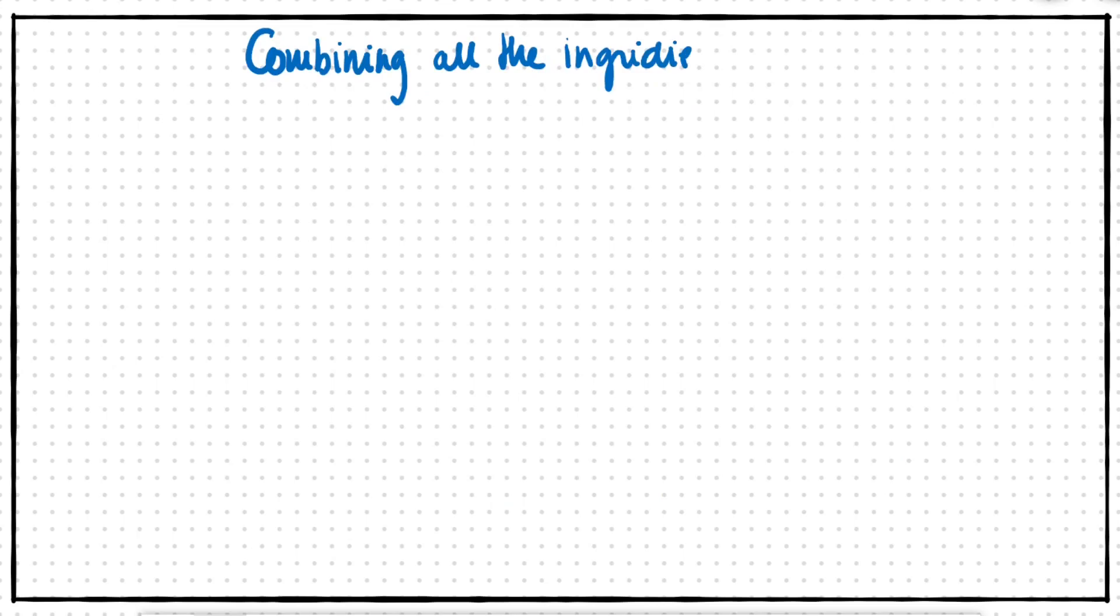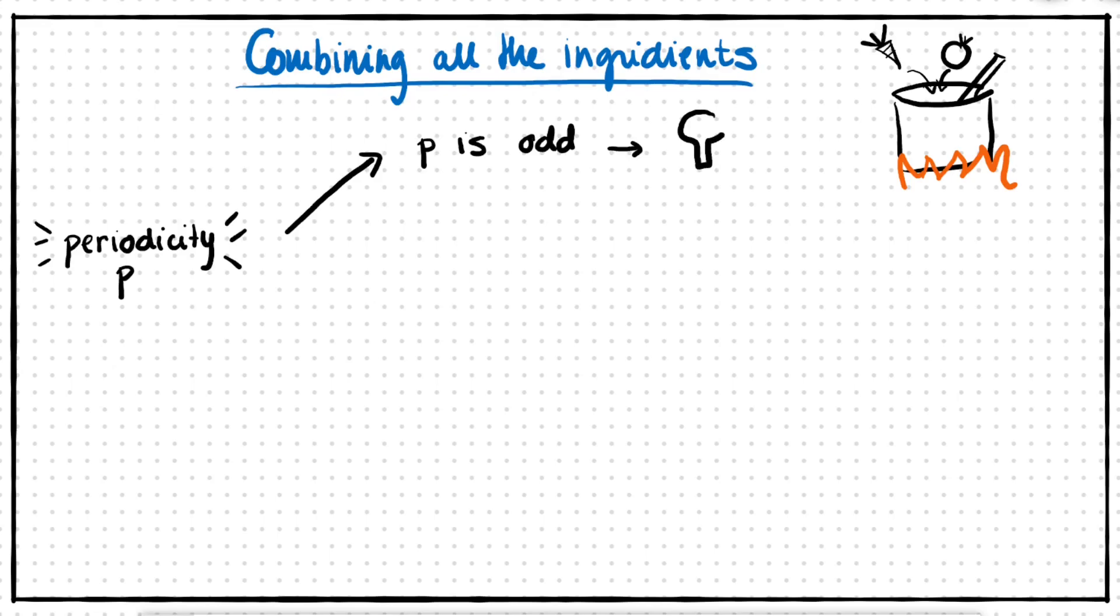Combining this with what we learned from the first video, we can put everything together. Once we have this periodicity p, and if p is even, we can get two numbers due to the p over 2 plus minus 1. And if neither of them is a multiple of n, we now have numbers that share factors with n.